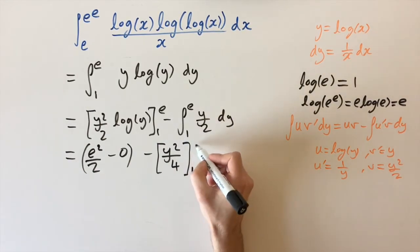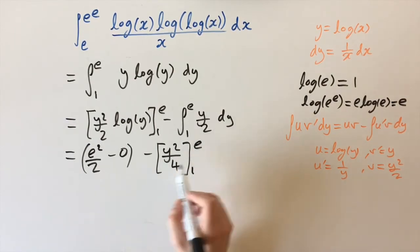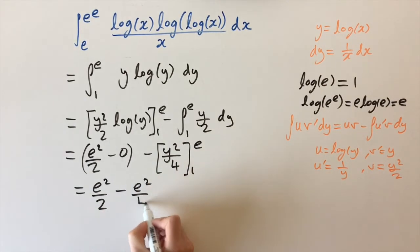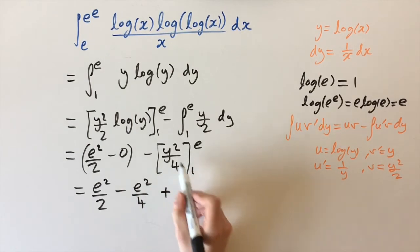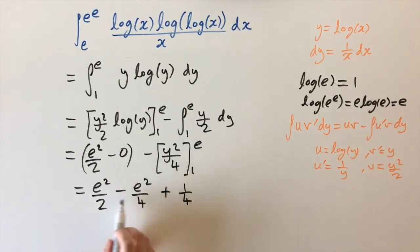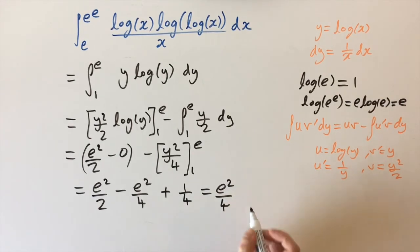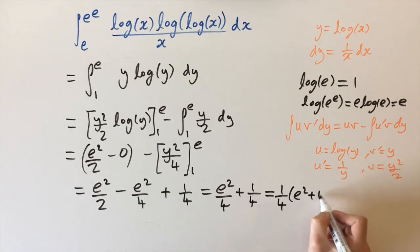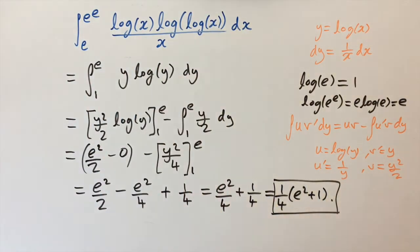Evaluating with limits, putting in e and subtracting the value at 1: we have e squared over 2 minus e squared over 4, which is e squared over 4. Then a double minus turns into a plus, and putting in 1 gives plus 1 over 4. So simplifying: 1 over 4 times (e squared plus 1). And this is our answer, which is quite nice for such a horrible looking integral involving logs.